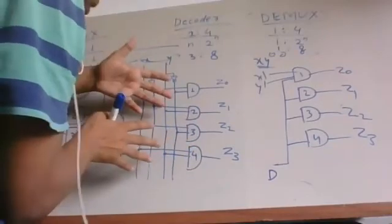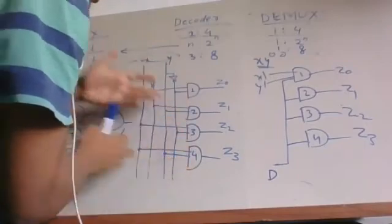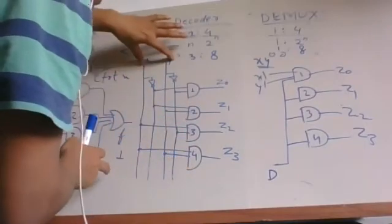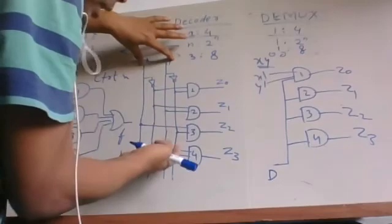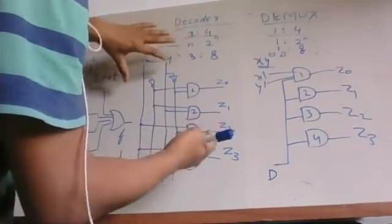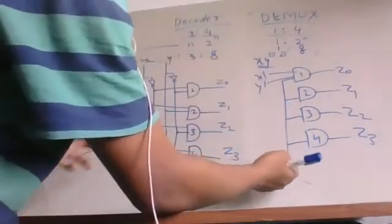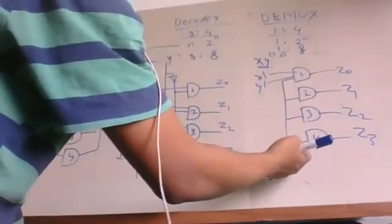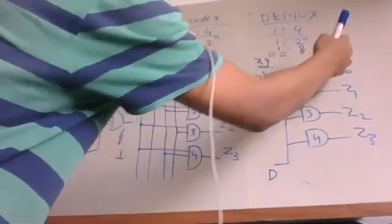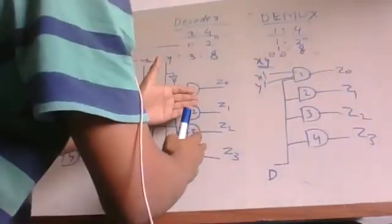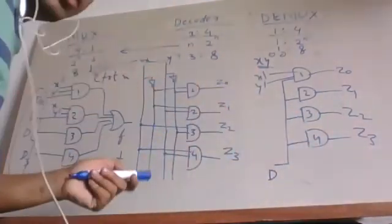When you provide data inputs to the AND gates, the data becomes input and XY becomes the control signal, behaving as a multiplexer. In the case of demultiplexer, we give one data to all gates, XY becomes the control signal, and outputs are managed as in the decoder. Thank you.